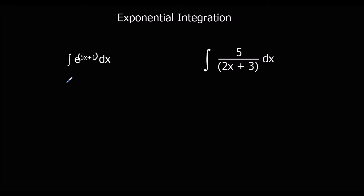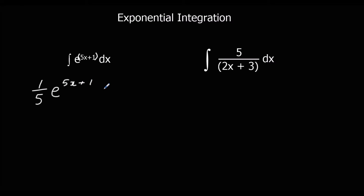It's going to stay the same. When we integrate it we're going to have e to the power of 5x plus 1 still, but then we're going to divide by the bracket differentiated. The bracket differentiated is 5, so we put a fifth. We've got a fifth e to the power of 5x plus 1 plus c. And if we differentiated that, we'd get back to our original question.